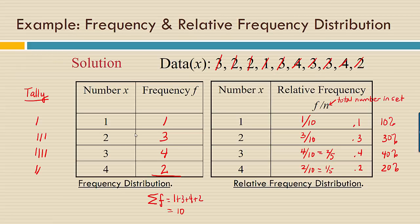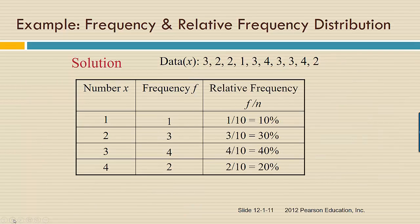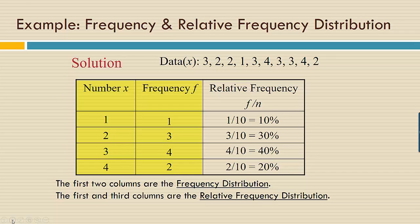Many times, instead of making two separate tables, we combine them into one big table, as you see here. In this table, the first two columns comprise the frequency distribution, and the first and third columns are the relative frequency distribution.